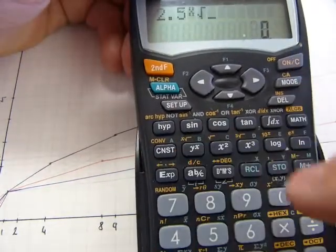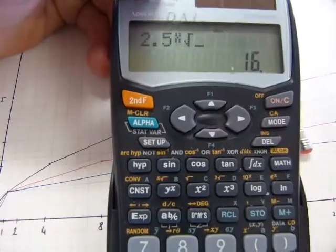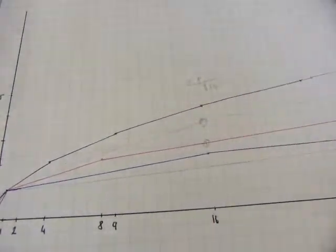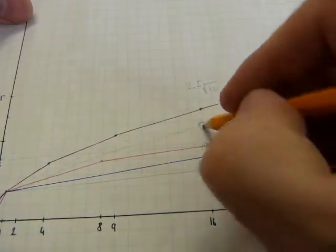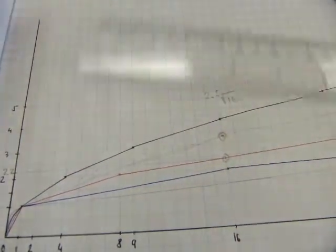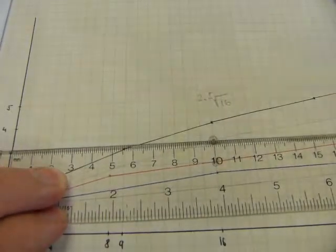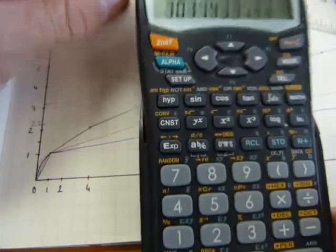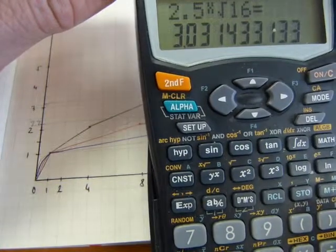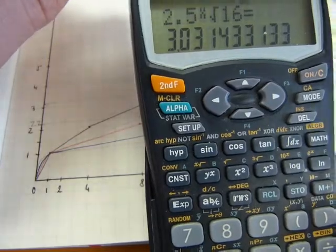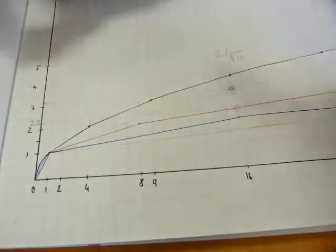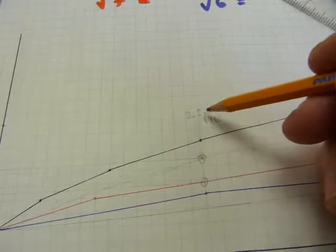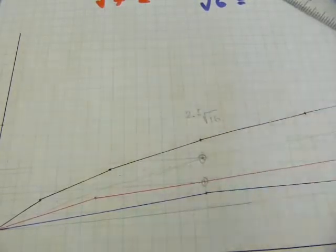Second function 16. Before I press equal, I estimate that the 2.5 root of 16 is going to be somewhere there, and if I make a horizontal line, it's kind of close to 3.1, 3.2, something like that. Let's press equal, kind of close to 3.1, 3.03. So the 2.5 root of 16 exists.